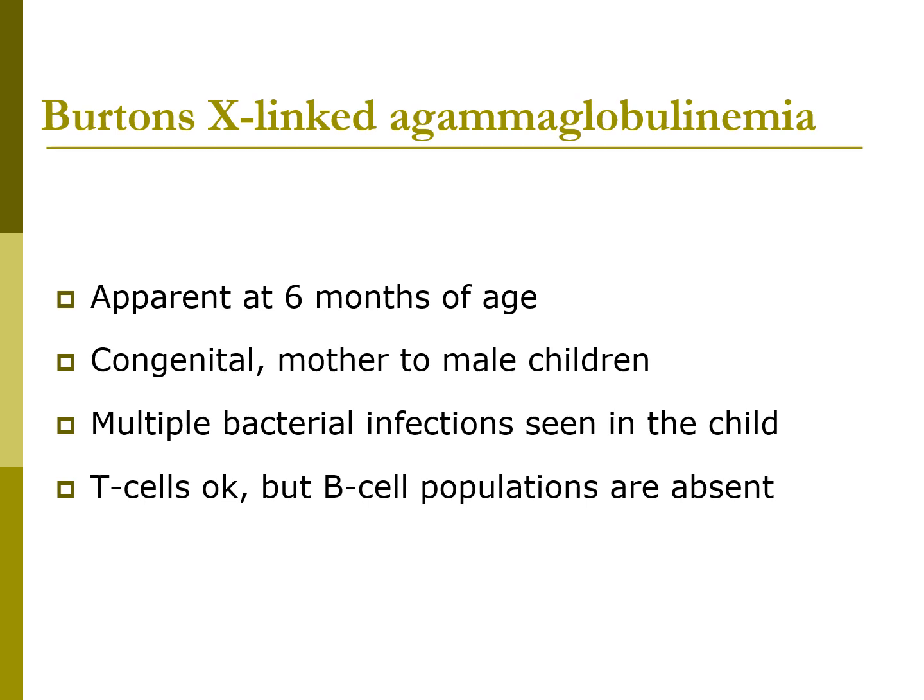They are not overly susceptible to viral diseases. Their immunoglobulins are very, very low, so the treatment is to get IgG injections every 3 to 4 weeks for life. Their T cells seem to be okay, but mature B cell populations are absent in the bone marrow and lymphoid tissues — their B cells never grow to maturity.